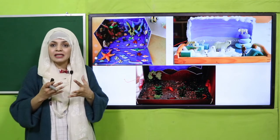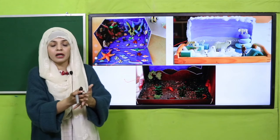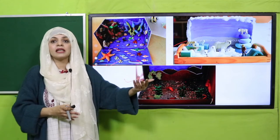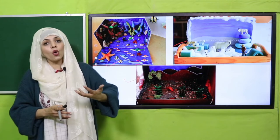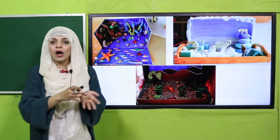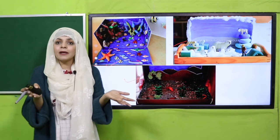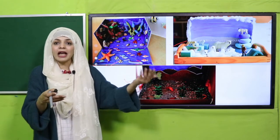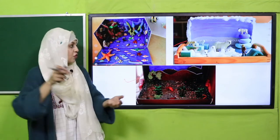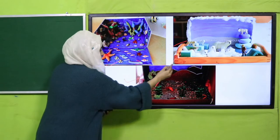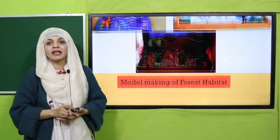Each habitat is different - for example, you cannot see sand in a polar region and you cannot see snow in a desert region. That's how both habitats are different from each other. Similarly, different types of plants survive in desert and different plants and animals survive in polar region, as you can see here.